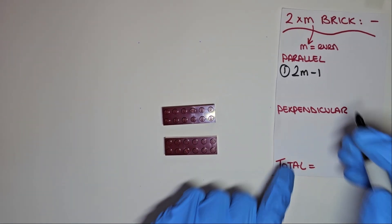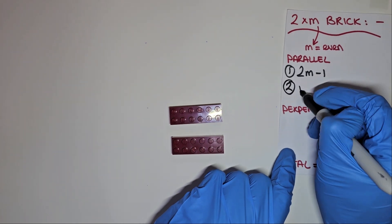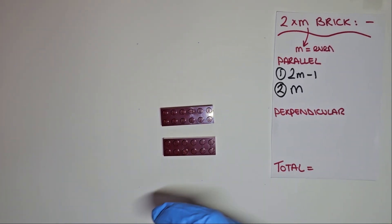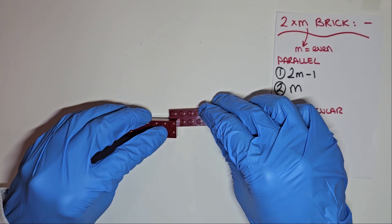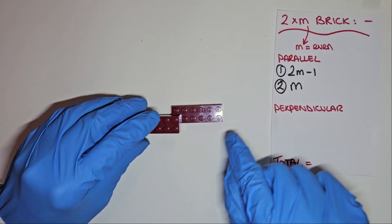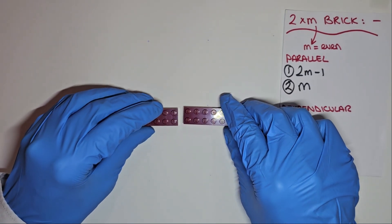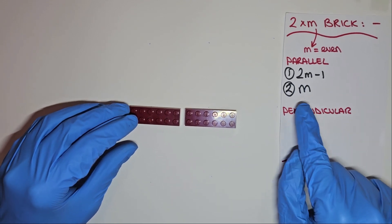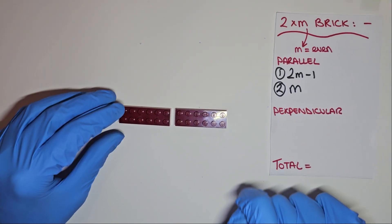Again, like before, we can shift to our last row only, but none are valid. They're just rotations of the combinations we encountered on the first row. As a result, in the general case, we'll have 2m-1, and m combinations in the parallel orientation.